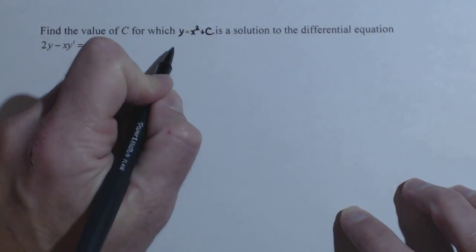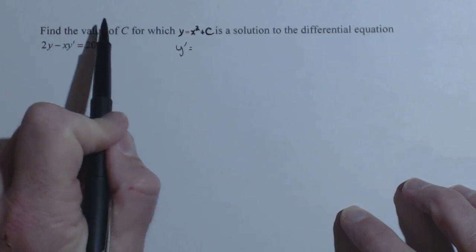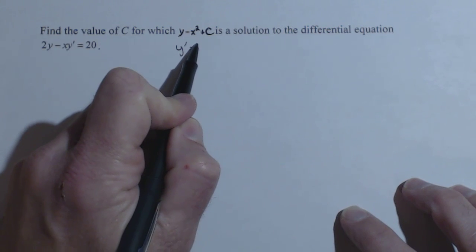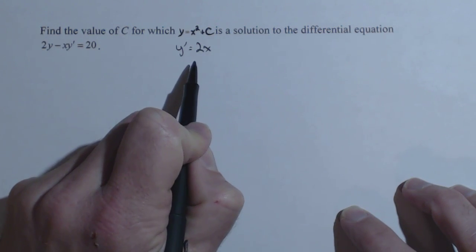We just need y prime. Now, C is just a constant, so when we do the derivative, derivative of x squared is 2x, derivative of C is 0. So y prime is 2x.